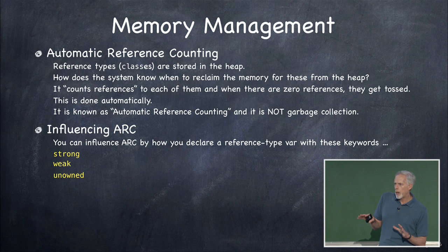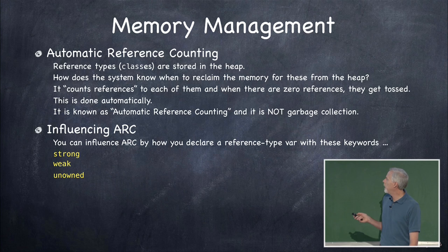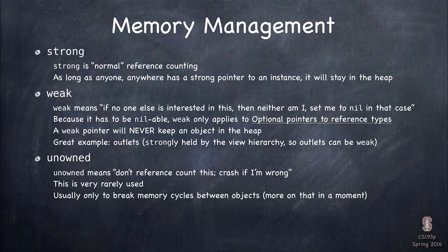Normally you don't think about ARC or memory in the heap at all, except there is a small way you can influence how ARC works. That's with three keywords: strong, weak, and unowned. These are all used when declaring a variable. Strong is the default — you don't even see the word 'strong' in Swift. A strong pointer forces whatever's in the heap to stay there until that pointer no longer points to it. You've got to get rid of all the pointers to something for it to clean up.